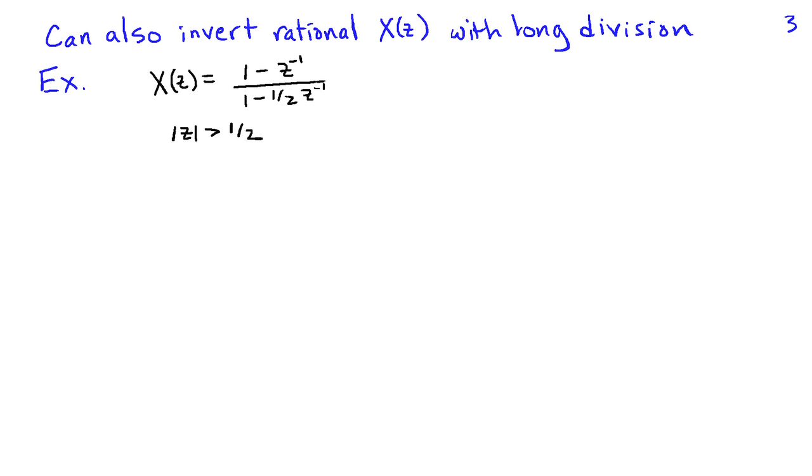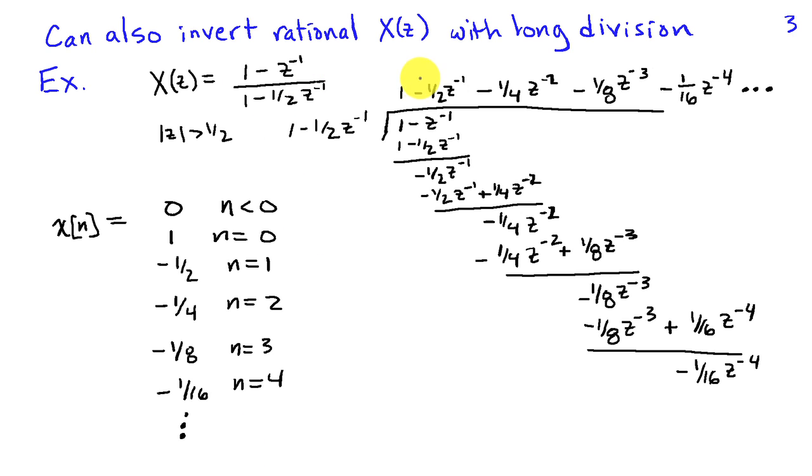So for example, if I have X of Z is 1 minus Z inverse divided by 1 minus 1 half Z inverse and I assume that my region of convergence is magnitude of Z greater than one half, then I can do long division here to express this rational function as a power series.